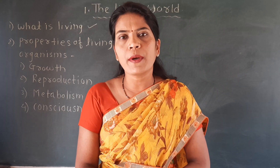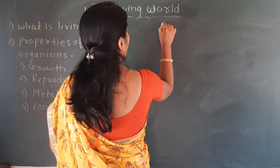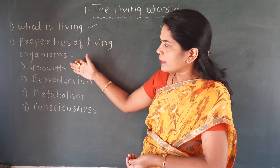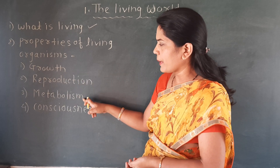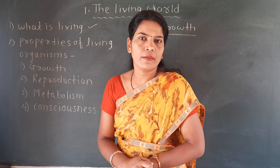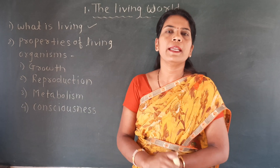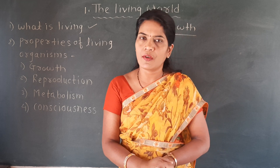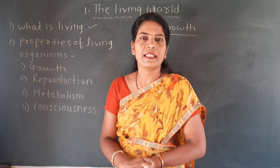The first property of the living organism is called growth. There are four important properties of the living organism: growth, reproduction, metabolism, and consciousness. Even though these are important properties, not all of them are the defining properties of the living organism. A defining property means it is not only related to the living organism — some of these properties have exceptions, which we are going to study in detail for each property.